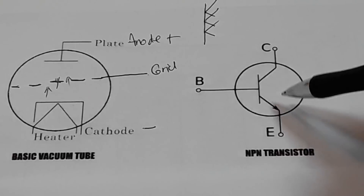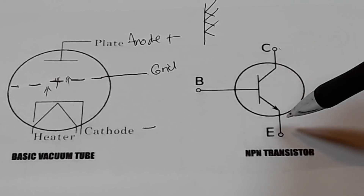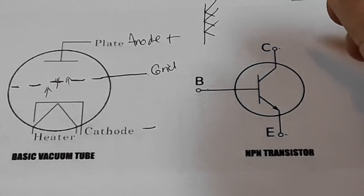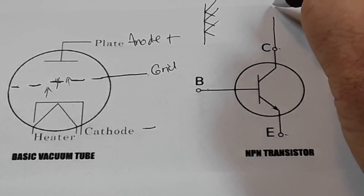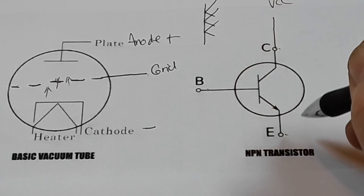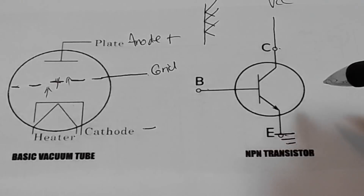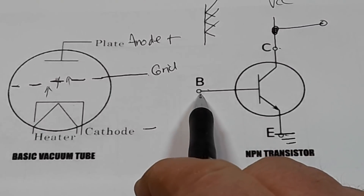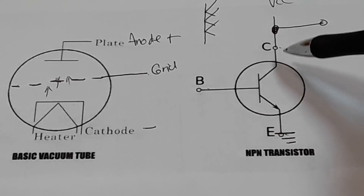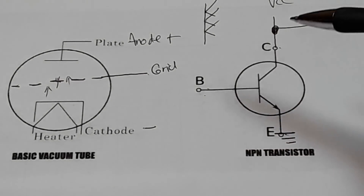By putting a voltage onto the grid, we control the electron flow from the cathode to the anode or plate. And that's pretty much what we've got going on with an NPN transistor. We have the collector, the emitter, and the base. From the collector we put in our voltage — it's called VCC — and from the emitter generally we go to ground. We control the flow by varying the current at the base.